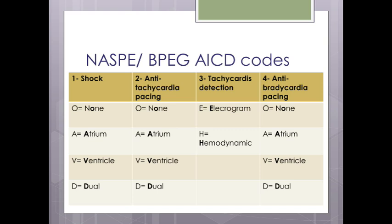ICD codes are similar to pacemaker codes. The first position represents the shock chamber (A, V, or D). The second position is anti-tachycardia pacing — None, Atrium, Ventricle, or Dual. The third position is tachycardia detection — via electrocardiogram or hemodynamic monitoring. The fourth position is anti-bradycardia pacing — None, Atrium, or both.